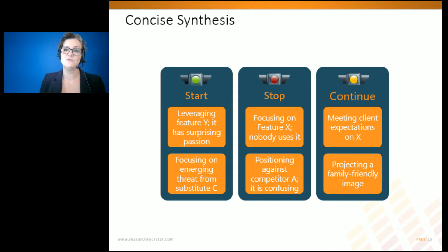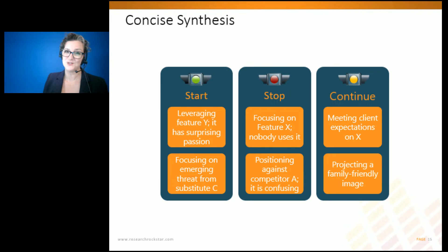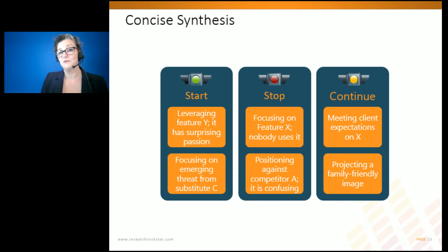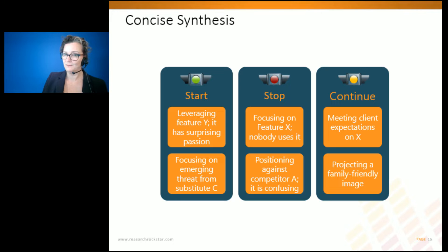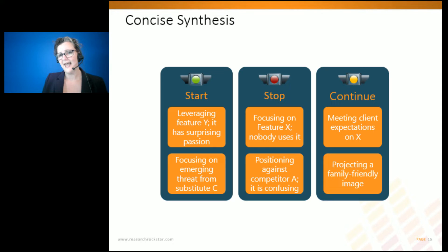By mapping key results into those three categories, we're making it easier for somebody to see what actions they can take with these research results. It leverages their existing knowledge of the framework — people like using things they already know — and it shows them what actions could potentially be taken. So that makes it powerful.